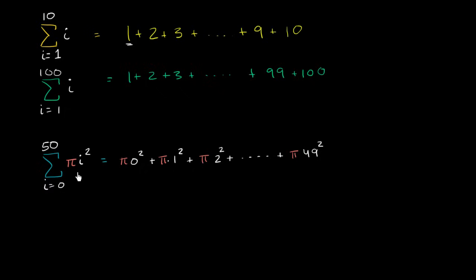And then finally, we increment i. i becomes 50. And we're going to have plus pi times 50 squared.